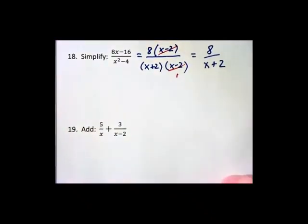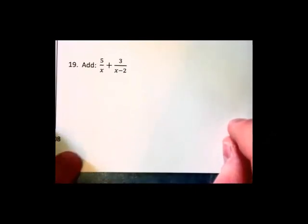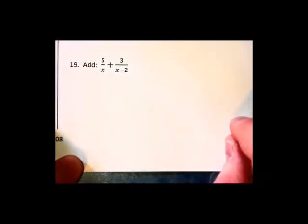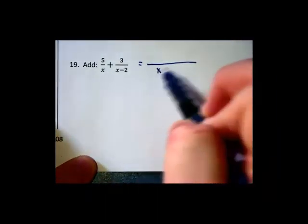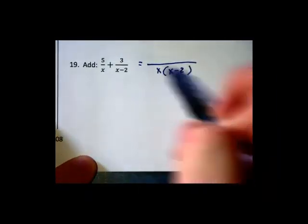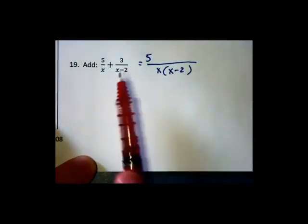Now when it comes to addition we need a common denominator. And x and x minus 2 each go into the product of x times x minus 2. Now we have to see how to convert these fractions.